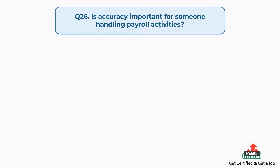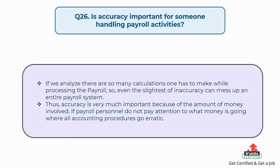Question number twenty-six: Is accuracy important for someone handling payroll activities? The answer is, there are so many calculations one has to make while processing the payroll, so even the slightest inaccuracy can mess up an entire payroll system. Thus, accuracy is very much important because of the amount of money involved. If payroll personnel do not pay attention to what money is going where, all accounting procedures go erratic.